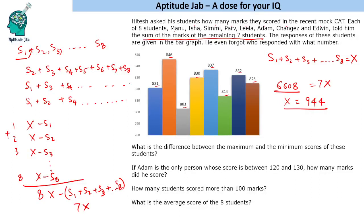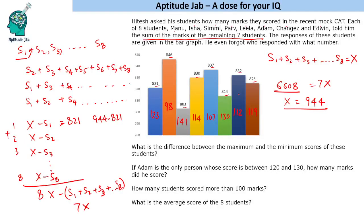To find individual scores, recall each reported value is X minus that student's score. For example, X minus S1 = 821, so S1 = 944 minus 821 = 123. Calculating all individual scores by subtracting each bar graph value from 944, we get: 123, 98, 141, 114, 107, 130, 112, and 119. These are the marks of the eight students, though we don't know which student got which score.